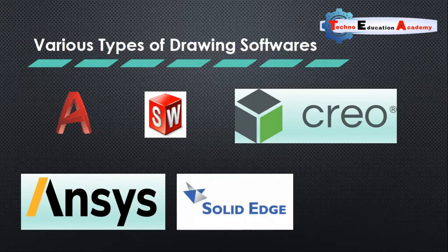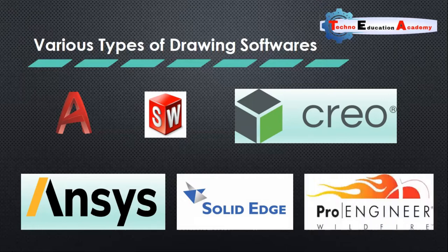The fourth is Solidate software, which is generally used for die and fixture design. The last is Pro Engineer, also known as Pro-E, in which you can do various kinds of assembly drawings as well as part detail drawings.